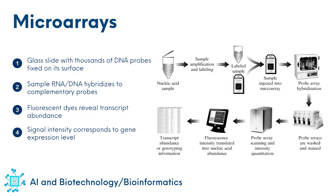The principle of microarray technology is based on DNA-DNA hybridization, which means that DNA fragments will bind specifically to another fragment with a complementary sequence. A microarray is a glass slide or a silicon chip that contains thousands of fixed DNA probes. Each probe is a short DNA sequence designed to represent a specific gene. These probes are immobilized at precise locations, so every spot corresponds to one gene. mRNA from samples is reverse transcribed into complementary DNA, and these cDNA molecules are then labeled with fluorescent dyes.